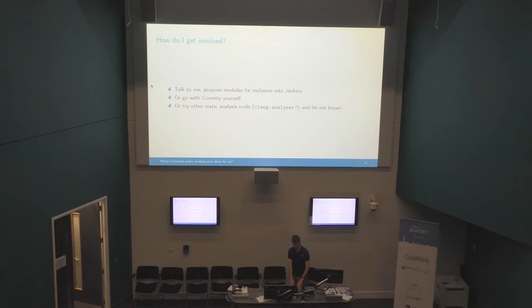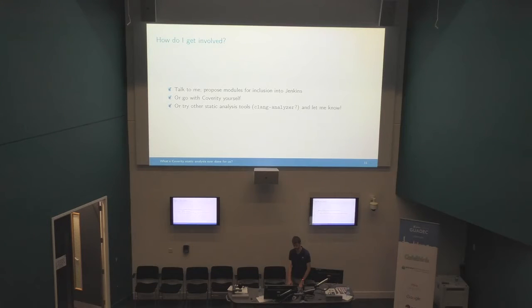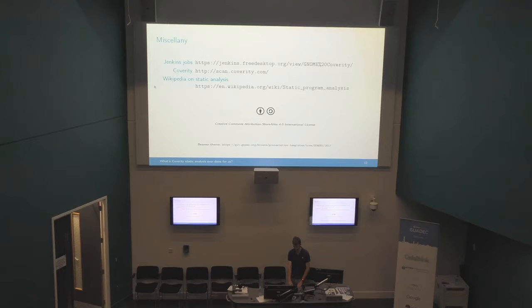Currently the set of modules is fairly small. If your modules are not in there and you want them included, please talk to me - it's not hard to set up once I've got Jenkins working again. Or you can use Coverity yourself - you don't have to use Jenkins or be tied into this infrastructure, you can just submit the scans yourself; it's freely available to download although it is proprietary. Or you can use other static analysis tools in your free time and just experiment with the results. Clang Analyzer is another good one, but there are other linting tools you can run on your code which have their own advantages and disadvantages.